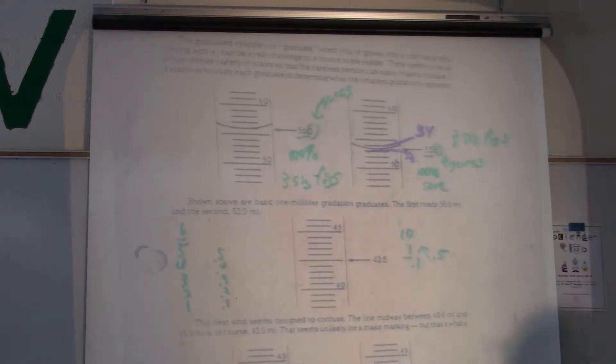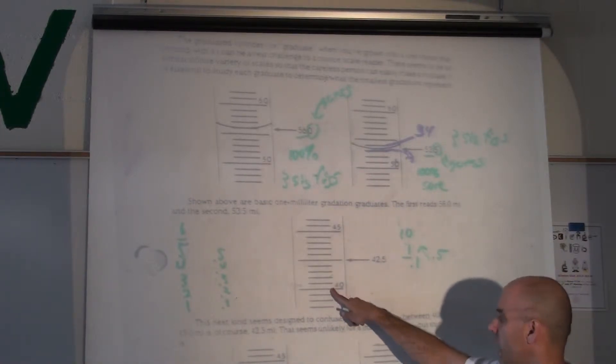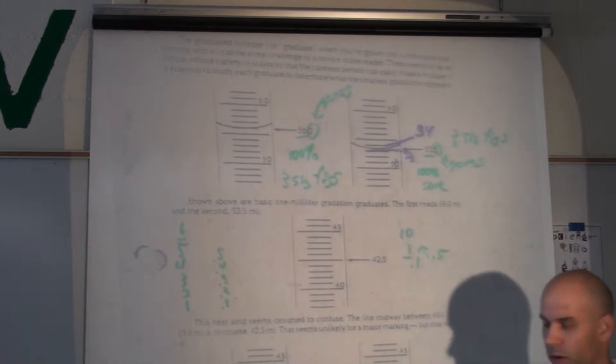So, if you're going up by half steps, if you're going up by .5, you would still guess out to the tenth. So, that's why in this graduated cylinder down here,